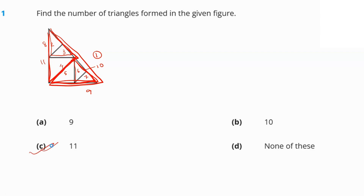Next: find the correct water image of the given word. You have to find the water image of the word 'QUIET' — Q-U-I-E-T. The water image is actually formed at the bottom; it's not a mirror image, it's a water image, so it will be formed at the bottom of this word.